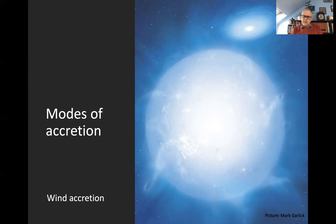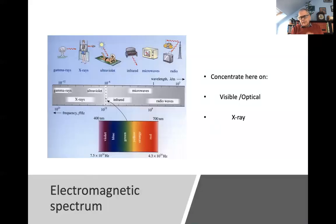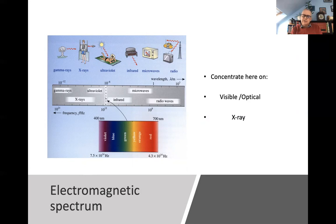The other mode is wind accretion, sometimes called Bondi-Hoyle accretion, where we have a giant companion star with a strong stellar wind. As the compact object — perhaps a neutron star — orbits around this giant star, it sweeps up some of that wind and accretes it onto its surface. In what follows I'll be talking about different parts of the electromagnetic spectrum, principally visible optical light, but also X-ray emission from these compact interacting binary stars. In the extreme gravitational fields and temperature environments of these systems, the material is hot enough to emit X-rays, which we detect using X-ray telescopes on satellites in orbit around the Earth.